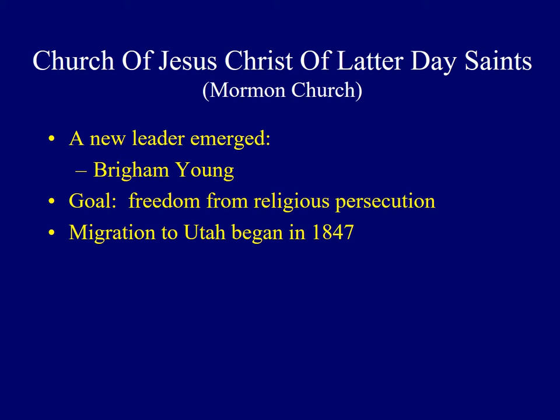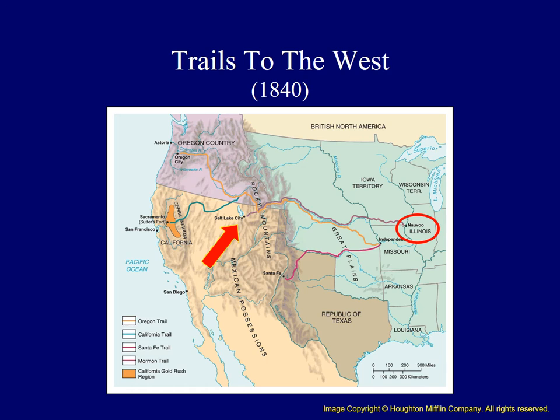Following Smith's death, a new leader emerged: Brigham Young. The goal of Young and other Mormon followers was simple — they wanted to practice their religion without persecution from outside groups. In 1847, they began an overland migration to what is now Utah, in hopes they could observe their faith in isolation. The Mormon Trail is identified here as they began their journey in Illinois and then traveled westward to Utah.